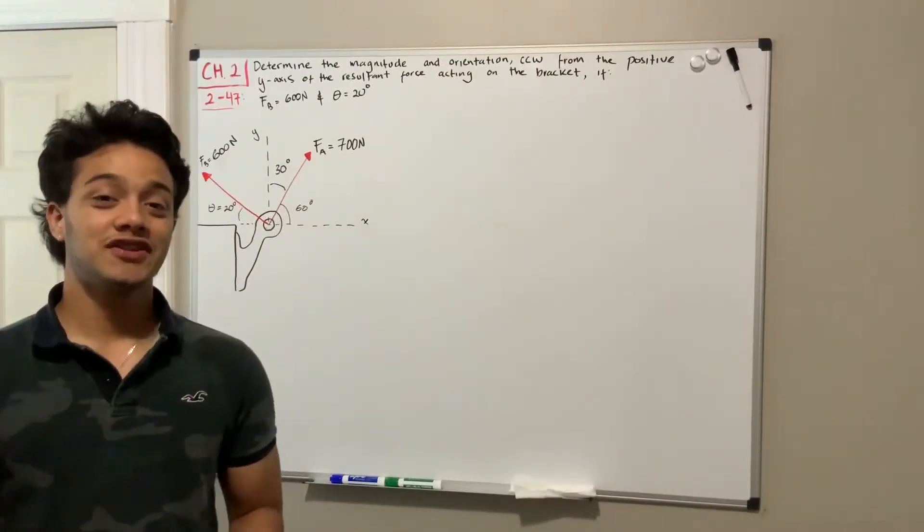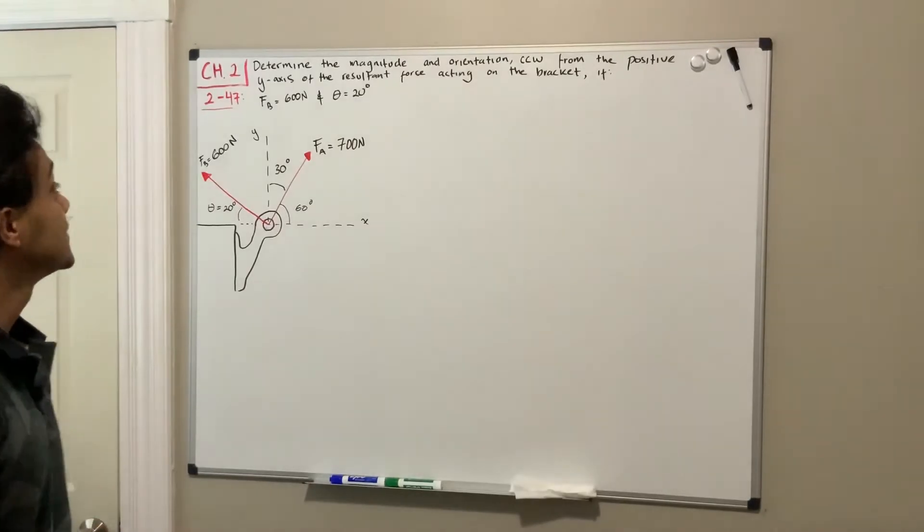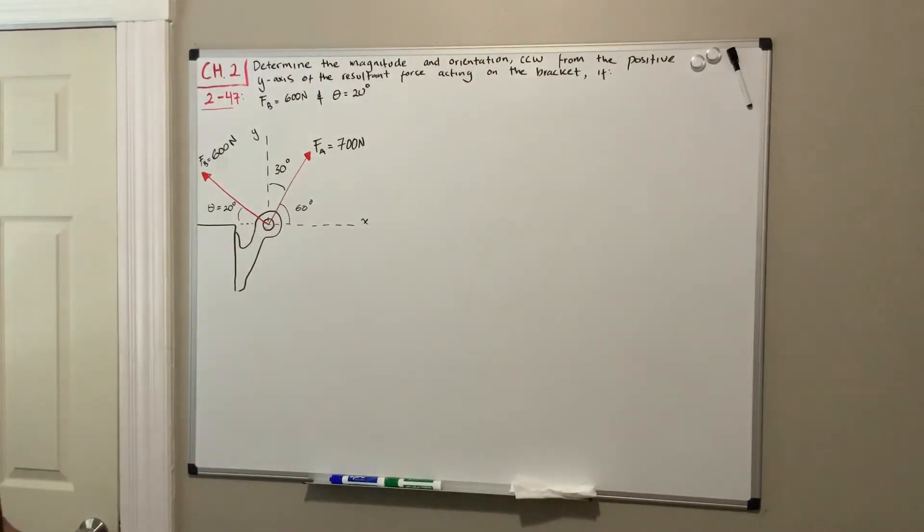Welcome back everyone to learning by teaching. We're in statics and we're going to do problem 2.47. It says determine the magnitude and orientation counterclockwise from the positive y-axis of the resultant force acting on the bracket if F_b is equal to 600 newtons and theta is equal to 20 degrees.